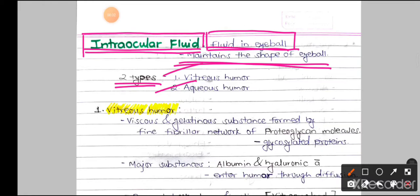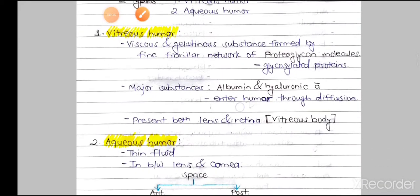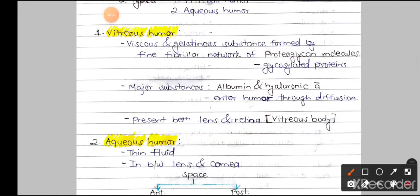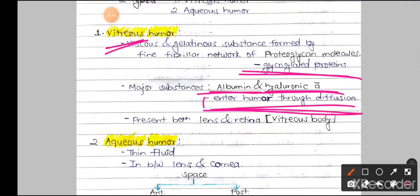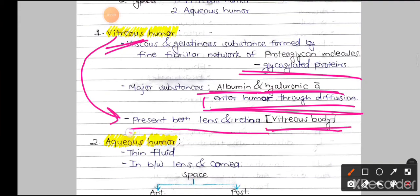The vitreous humor is a viscous and gelatinous substance formed by a fine fibrillar network of proteoglycans, which are glycosylated proteins. Its two major substances are albumin and hyaluronic acid, which enter through diffusion. The innermost layer of the eyeball is the retina, and before it is a vascularized layer with many capillary beds from which diffusion occurs. The vitreous humor is present in the vitreous body — the chamber between the lens and the retina.